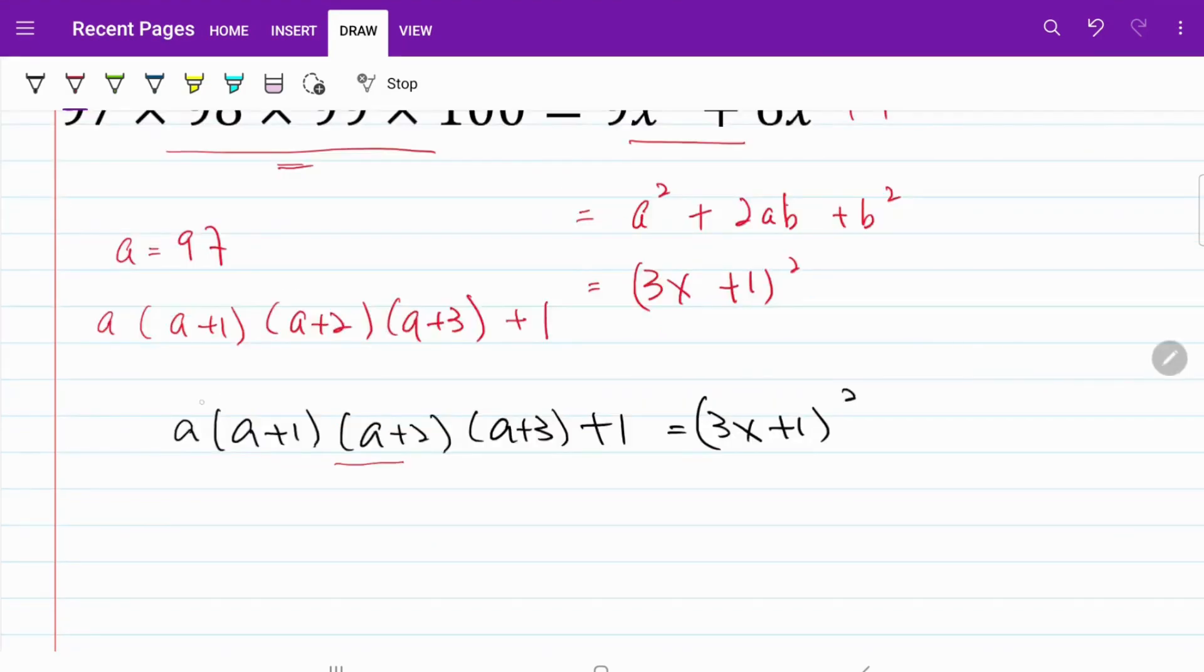What I'm going to do is, I'm going to multiply a with a plus 3 and a plus 1 with a plus 2. If we do that, then what we have is a square plus 3a multiplied by a square plus 3a plus 2 plus 1 is equal to 3x plus 1 bracket square.